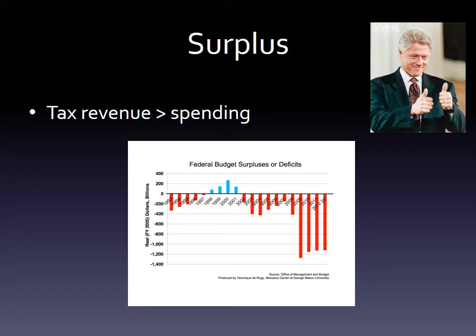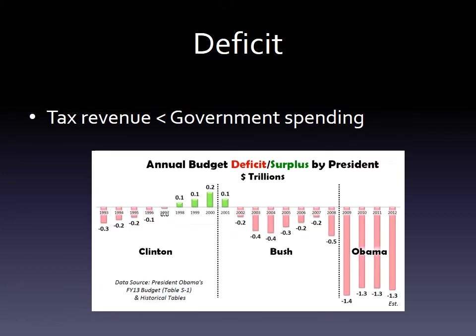Something we haven't seen in a while — obviously since Bill Clinton — is a budget surplus. That is when tax revenue is greater than government spending. We had a surplus for four years from 1998 to 2001, and lots of deficits ever since. A deficit is what we are used to: tax revenue is less than government spending, and you can see how large those deficits have become.